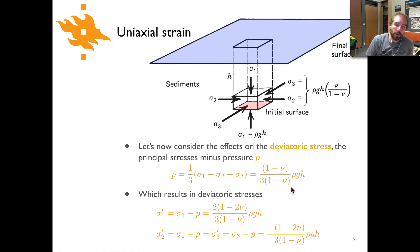If we look then at what happens in terms of the deviatoric stresses in this particular case, well first off I'll just remind you that this is the principal stresses minus the pressure p, where p is the mean stress or one third times sigma one plus sigma two plus sigma three, the average of the three principal stresses. And if you plug in what we had for sigma one, sigma two, and sigma three from the previous slide, you'll end up with something that looks like one minus nu over three times one minus nu times rho gh.